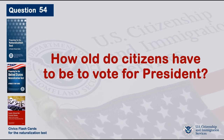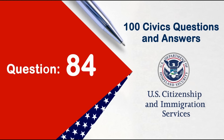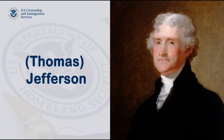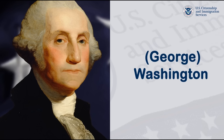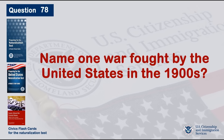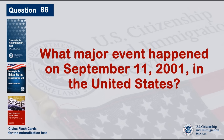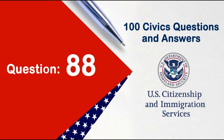How old do citizens have to be to vote for president? Eighteen and older. Who wrote the Declaration of Independence? Thomas Jefferson. Who was the first president? George Washington. Name one war fought by the United States in the 1900s. World War I. What major event happened on September 11, 2001 in the United States? Terrorists attacked the United States.